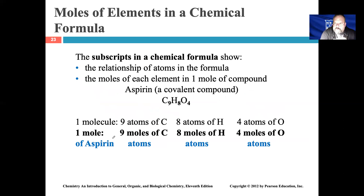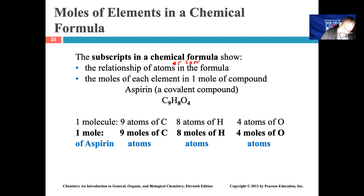When we talked about chemical formulas previously, we noted that the subscripts tell you the number of atoms in a covalent compound or the number of ions in an ionic compound. It turns out those subscripts not only show the relationship of atoms or ions in the formula when counting individually, but they also show the number of moles of each element in one mole of that compound.